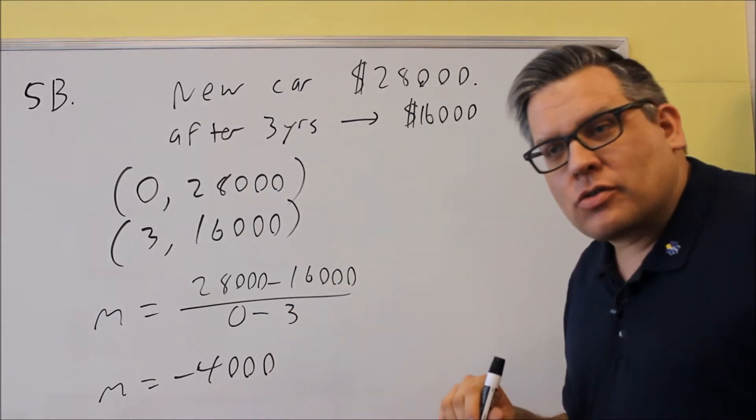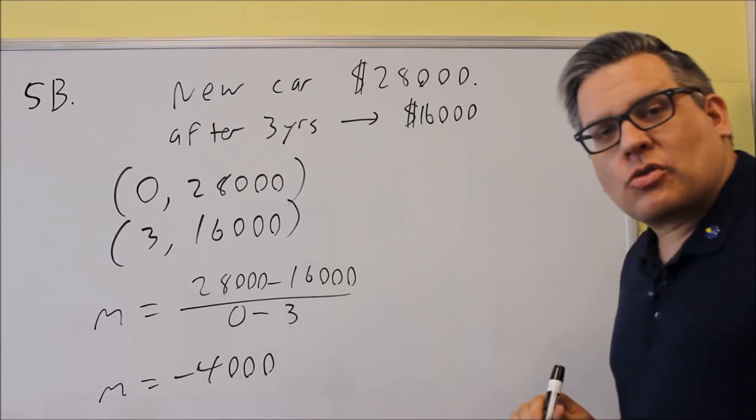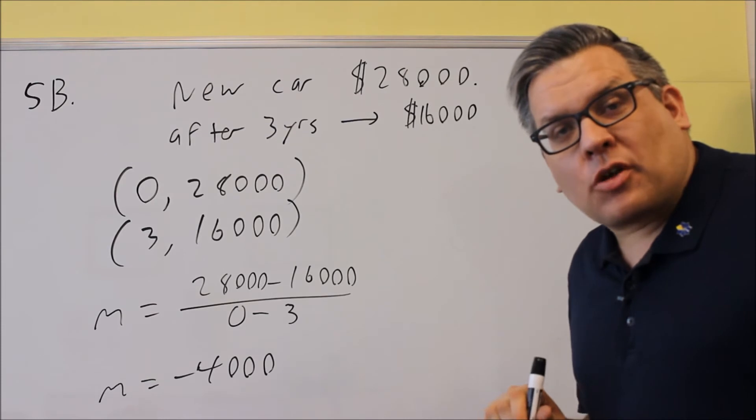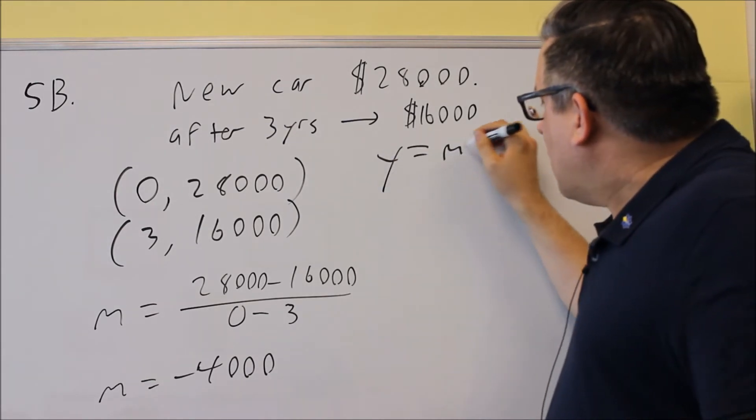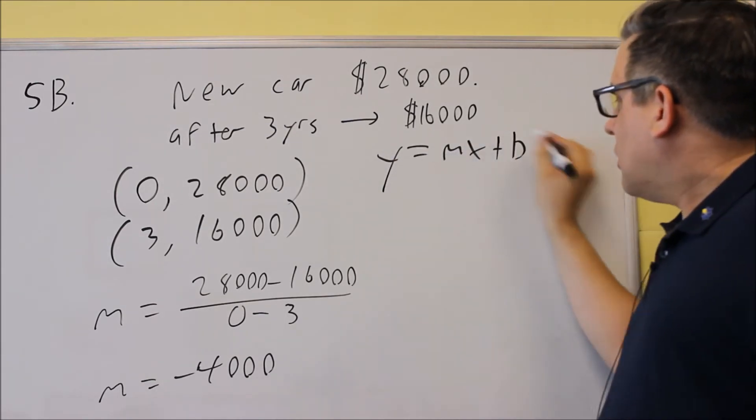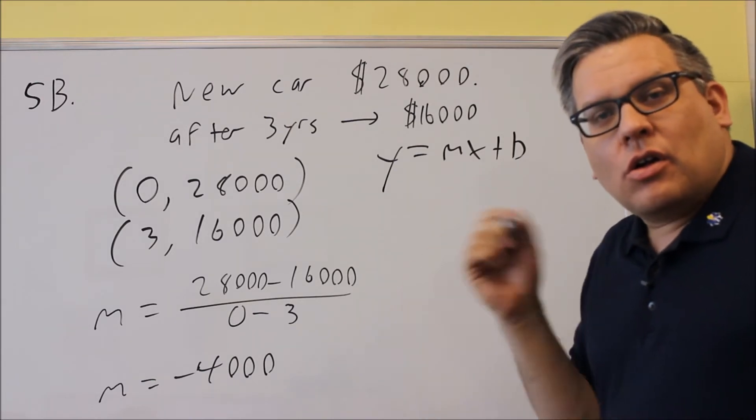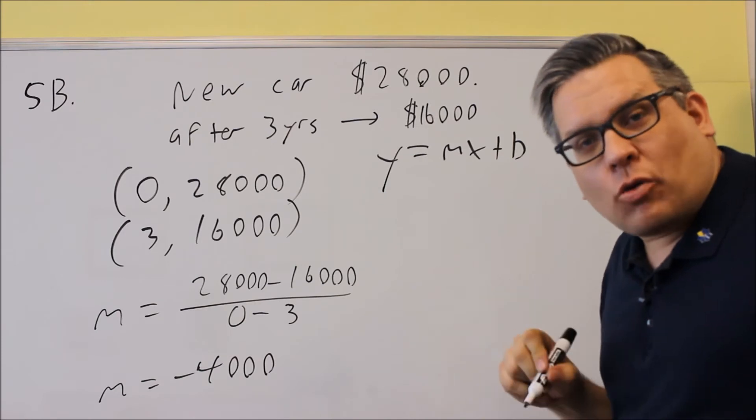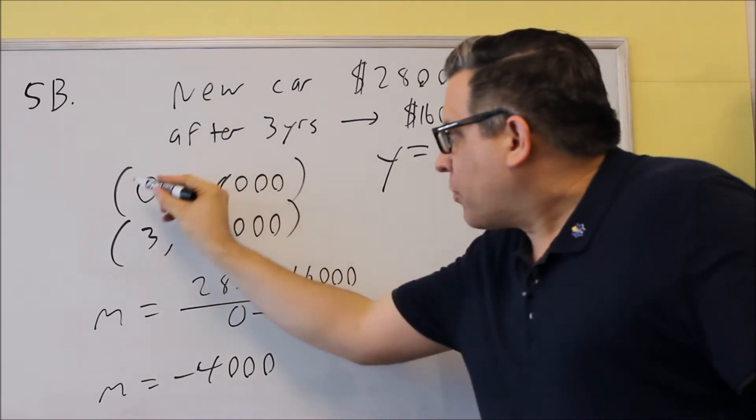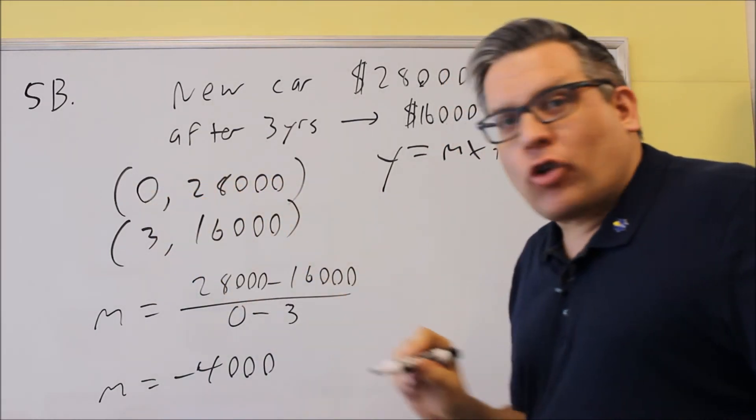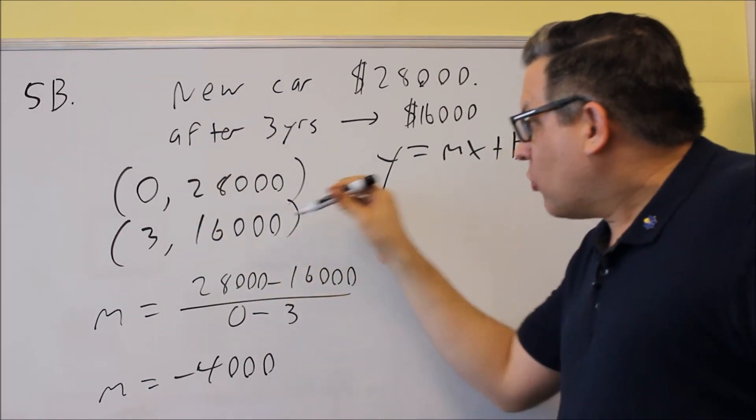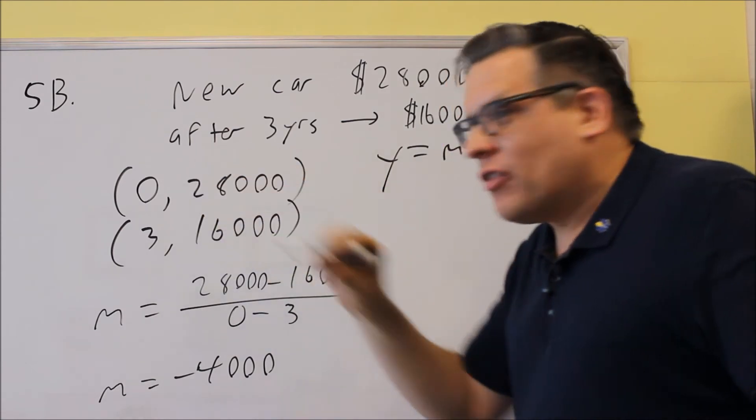Now we get our equation in terms of y equals mx plus b. When I have y equals mx plus b, the b is the y-intercept, which happens when x equals 0. For this problem, I have one point with a 0 in it, so I can write my equation based on this.